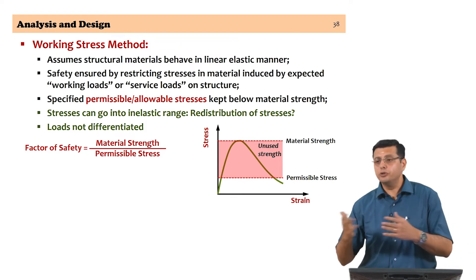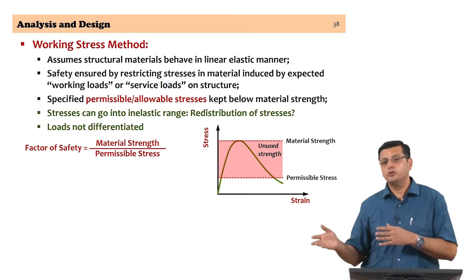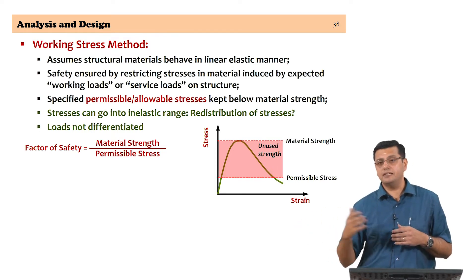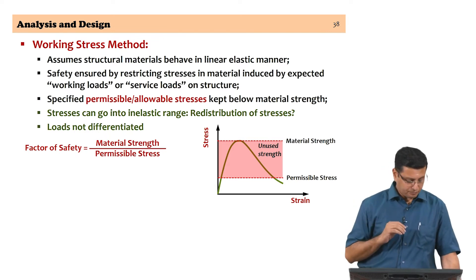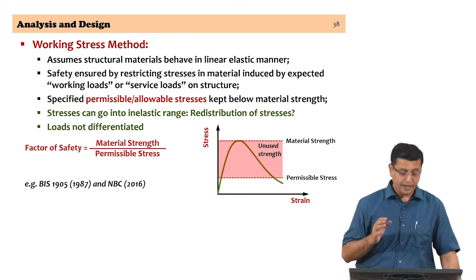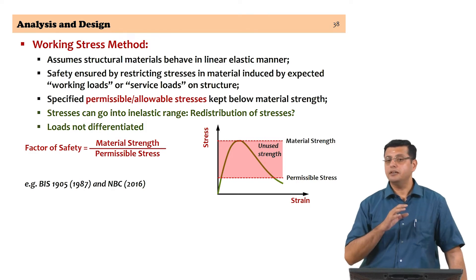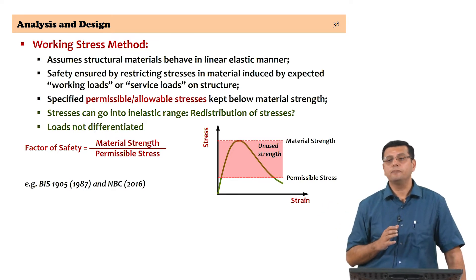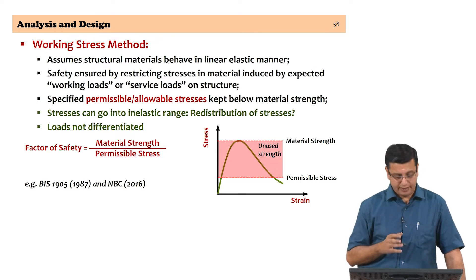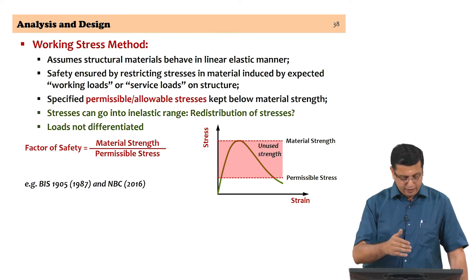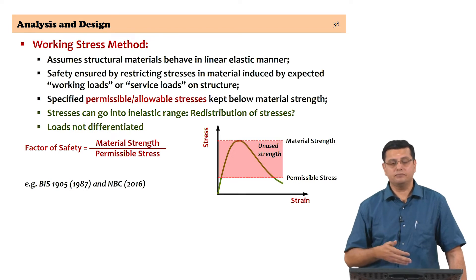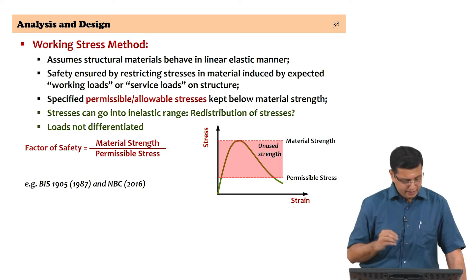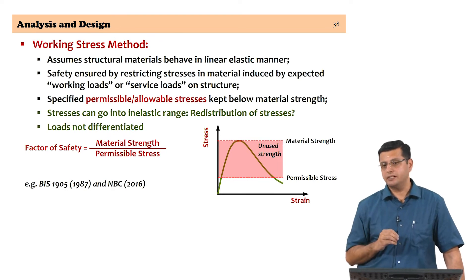As you move from the working stress method to strength design methods, which gained popularity in the 1960s and 70s, the ultimate strength design started looking at these ratios not from the stresses point of view but from the forces point of view, differentiating between the different types of actions on the system. Examples of codes still using the working stress method are Indian Standard IS 1905, which deals with unreinforced masonry, and the National Building Code 2016, where reinforced masonry design is addressed.